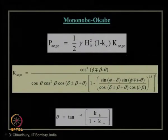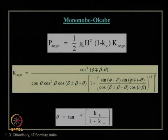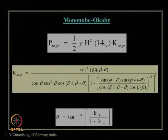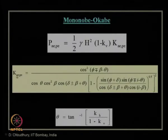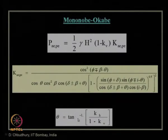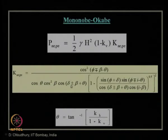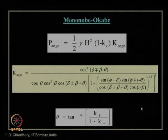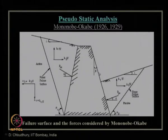In these expressions, k_v is the vertical seismic acceleration coefficient, H is the height of the wall, and γ is the unit weight of the backfill material. The expressions for K_ae or K_pe involve the seismic inertia angle θ = tan⁻¹(k_h / (1 − k_v)), along with δ (wall friction angle), φ (soil friction angle), β (wall batter — inclination of the wall), and i (inclination of the ground surface).